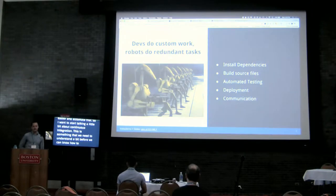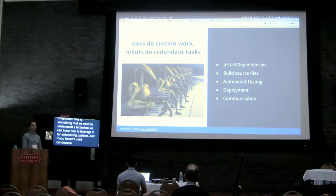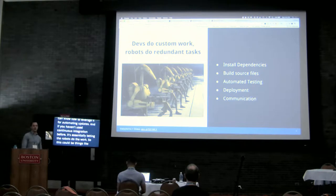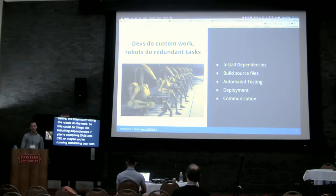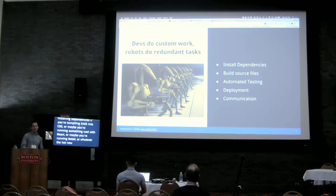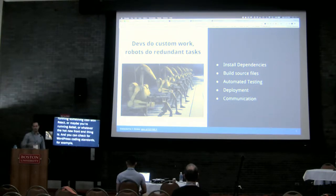If you haven't used continuous integration before, it's essentially the idea of letting the robots do the work. This could be things like installing dependencies, compiling Sass into CSS, or maybe doing something with React where you need to run Babel. All of those steps can be automated. We can also have tests — you can check for WordPress coding standards, for example.